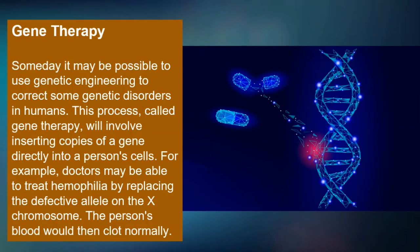Genetic engineering can also be used to correct some genetic disorders in humans. This process, called gene therapy, involves inserting copies of a gene directly into a person's cells. For example, doctors may be able to treat hemophilia by replacing the defective allele on the X chromosome, so the person's blood would then clot normally.